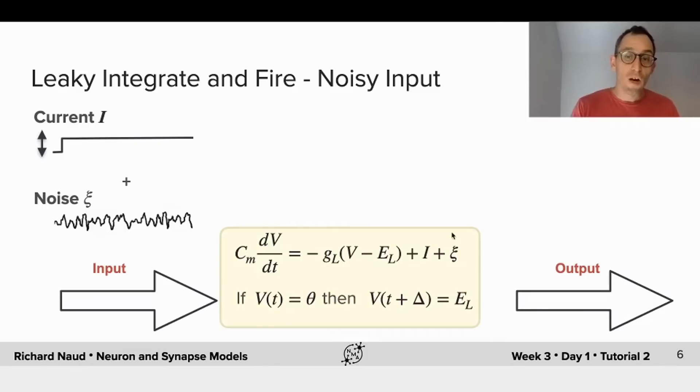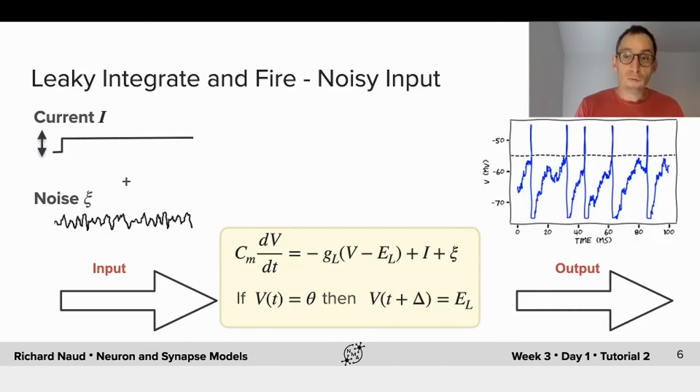So we add noise to the Leaky Integrate and Fire model, and the output will look fairly similar but more noisy. Now, you can't calculate the interspike interval at one point and call it the frequency. You need to average over multiple spikes.